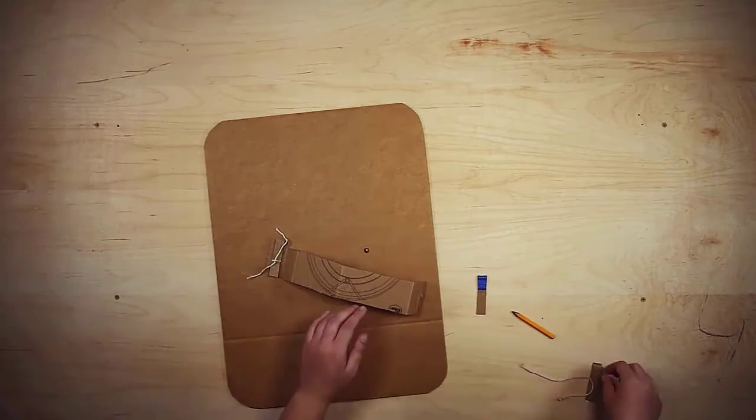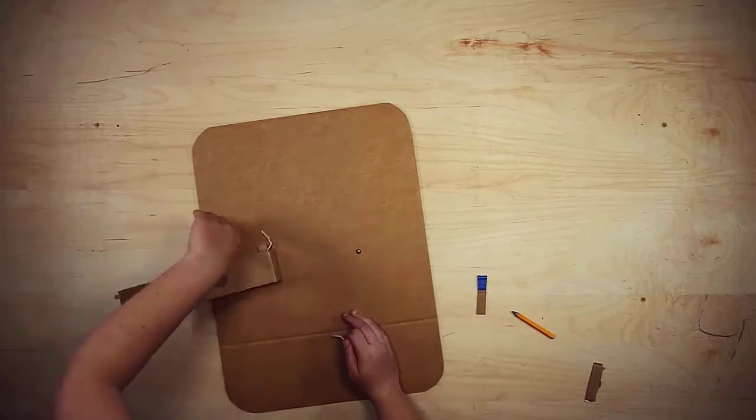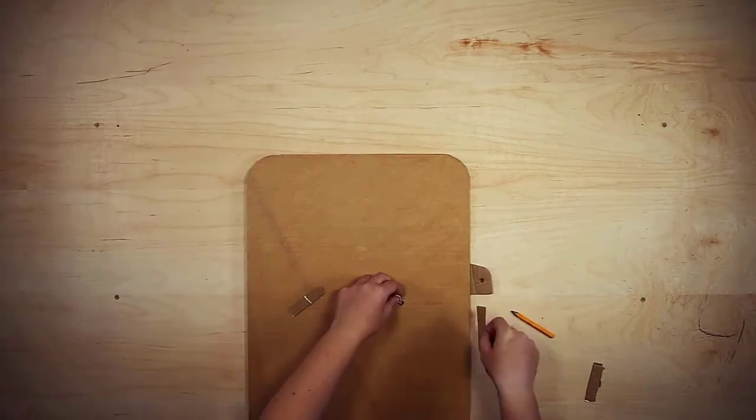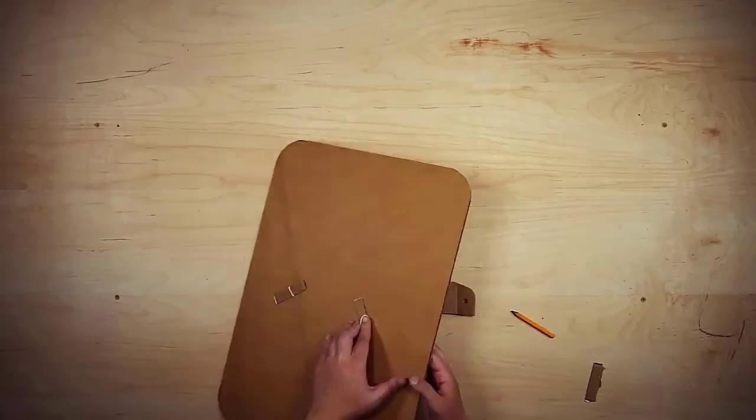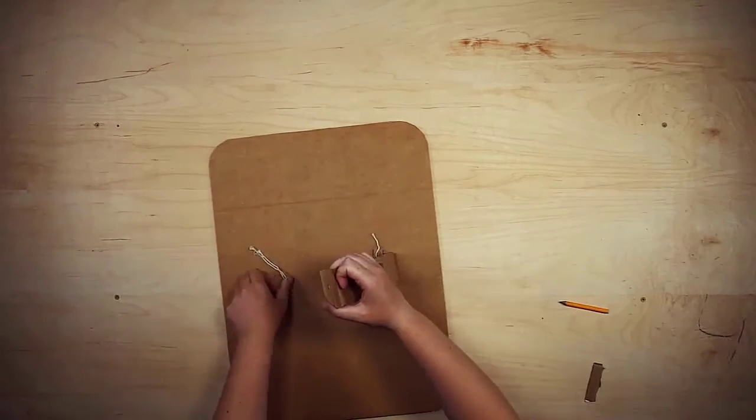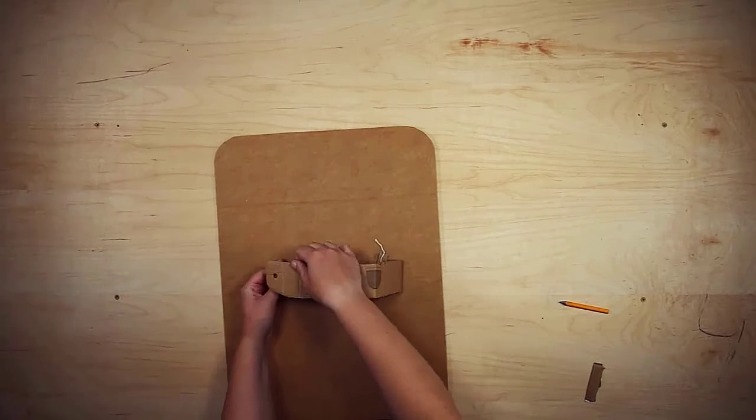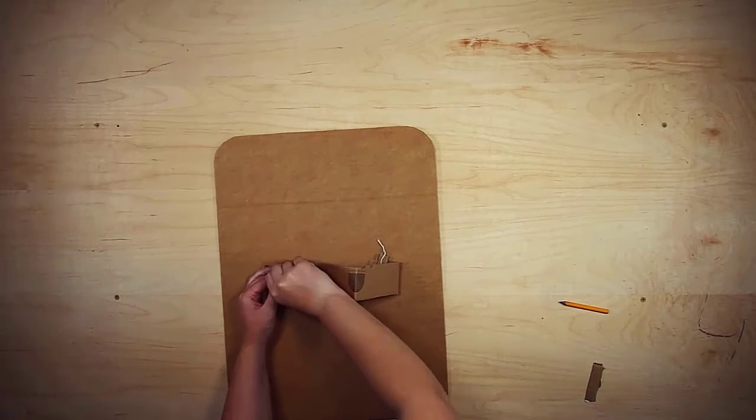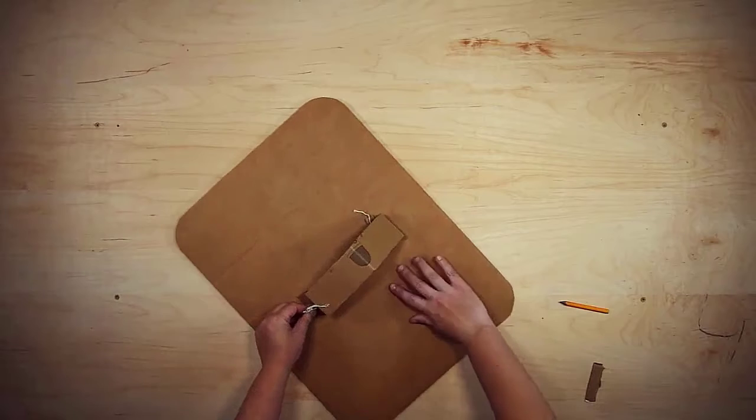Again, you're going to fold that string over, put it through your shield so that you can get the loop on the other side. Then you're going to put the strip in the loop, pull. Make sure that the hole is ready for the string. Put the end of the string through your handle. Grab your last piece, a little strip here, and tie that on.